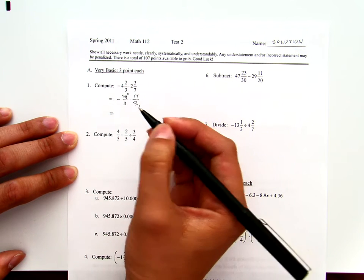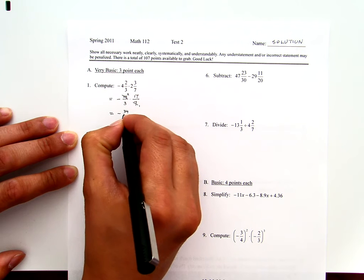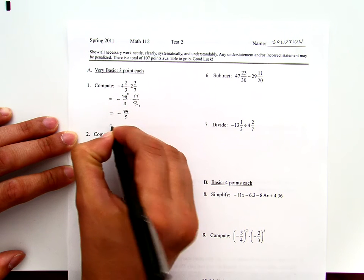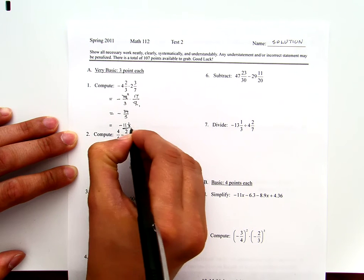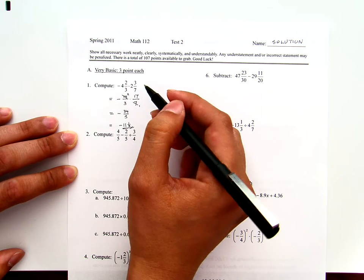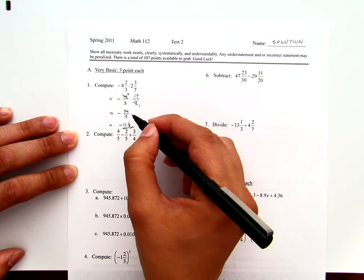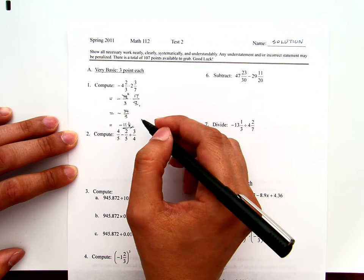This will be negative 34 over 3, which is negative 11 and 1/3. Because we start with a mixed number, if possible, we should change it back to a mixed number.